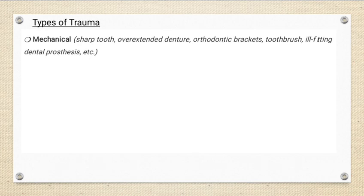Let's discuss the types of trauma, starting with mechanical trauma. Mechanical trauma can be caused by a sharp tooth, which is a very common and obvious cause leading to trauma at the lateral border of the tongue. In addition, dental appliances such as orthodontic brackets and wires can also cause trauma. Over-extended or ill-fitting dentures, or sharp edges of denture borders, can also cause mechanical trauma leading to ulcers.